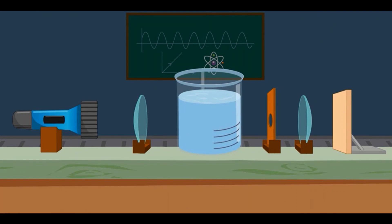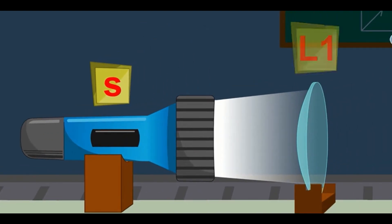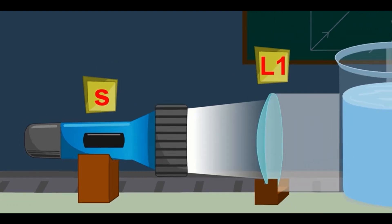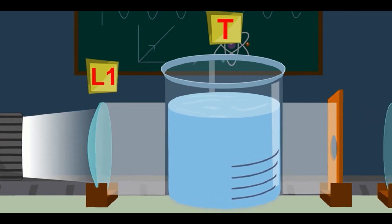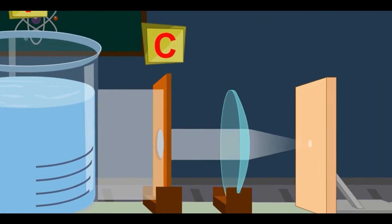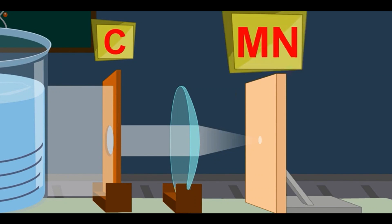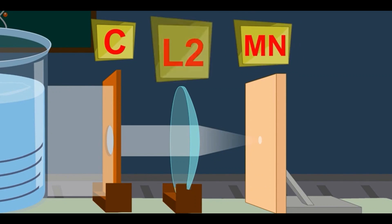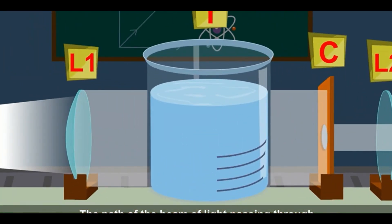For this experiment, place a strong white light source at the focus of a converging lens L1, which provides a parallel beam of light. Allow this light to pass through a transparent glass tank T containing clear water. Then allow the beam to pass through a circular hole C made in a cardboard and obtain a sharp image of the circular hole on screen MN using a second converging lens L2. As you can see, the path of the beam of light passing through clear water — a true solution — is not visible.